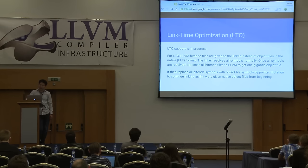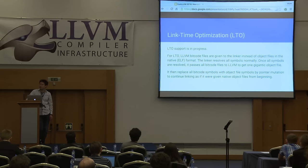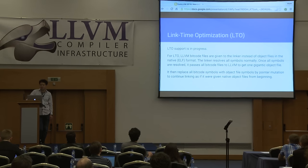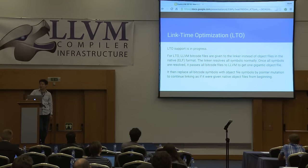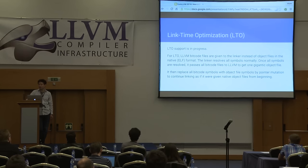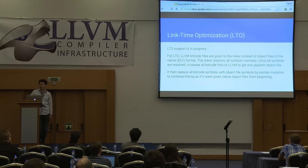The new LLD supports link-time optimization, or LTO. When you do LTO, your input files are not regular object files but LLVM bitcode files. Bitcode files contain symbols just like regular object files, so we resolve all symbols in the normal procedure. Once done, many symbols in the symbol table point to defined symbols from bitcode files. We then pass all bitcode files to LLVM to compile them into one large object file in native format, and replace pointers pointing to bitcode symbols with pointers from the native object file, so linking can continue as if the bitcode files were in native format from the beginning.